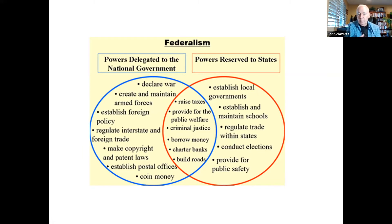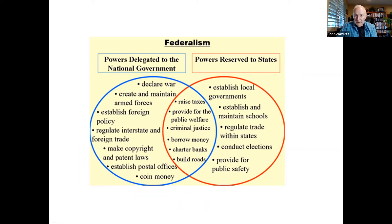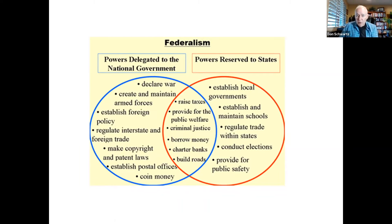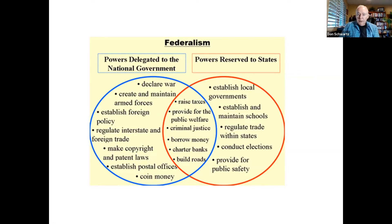There are some powers shared by both the central government and state governments, called concurrent powers. In this Venn diagram, overlapping powers are those both can exercise: both have the power to raise taxes, so we pay federal and state taxes. Both provide for public welfare, both have criminal justice systems, both can borrow money, both have the power to charter banks, and both can build roads — federal interstate highways and state roads.